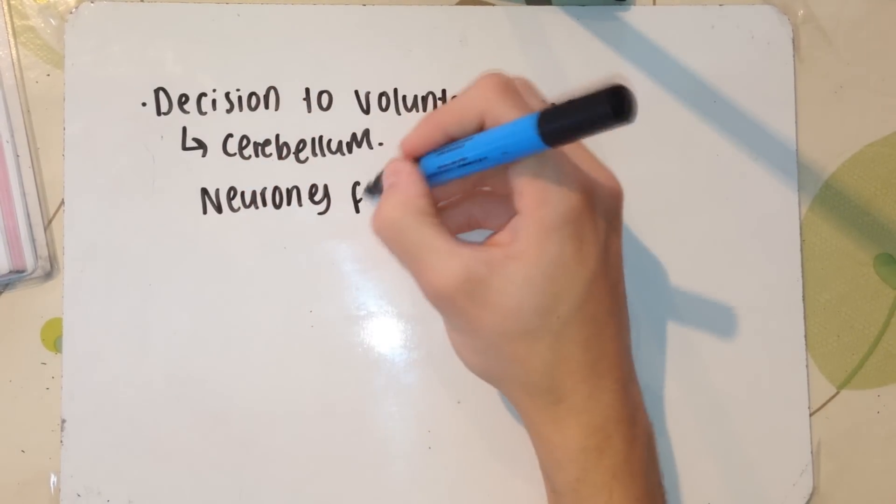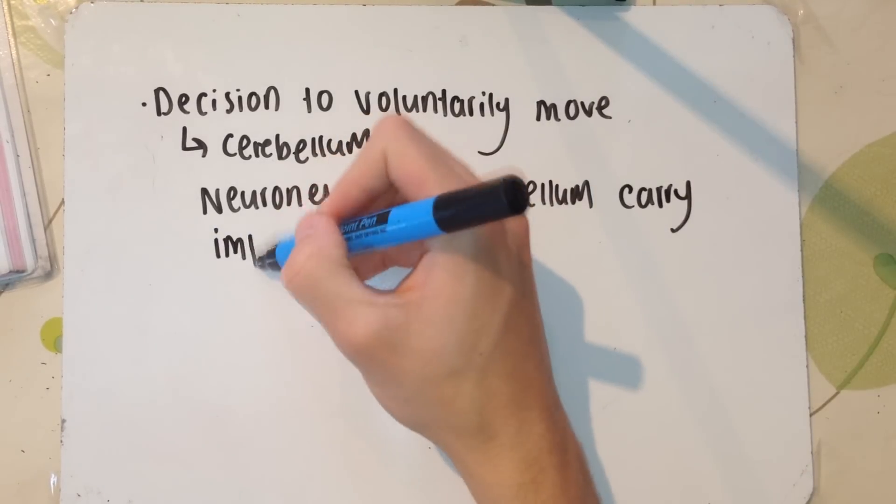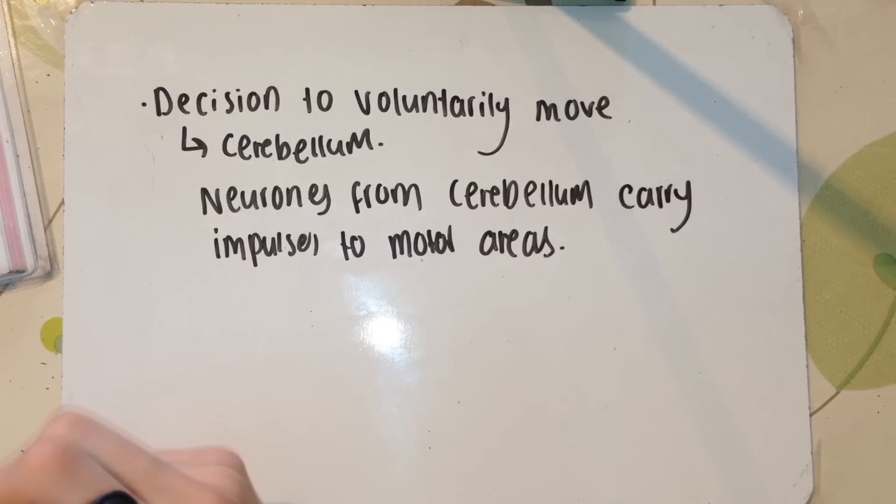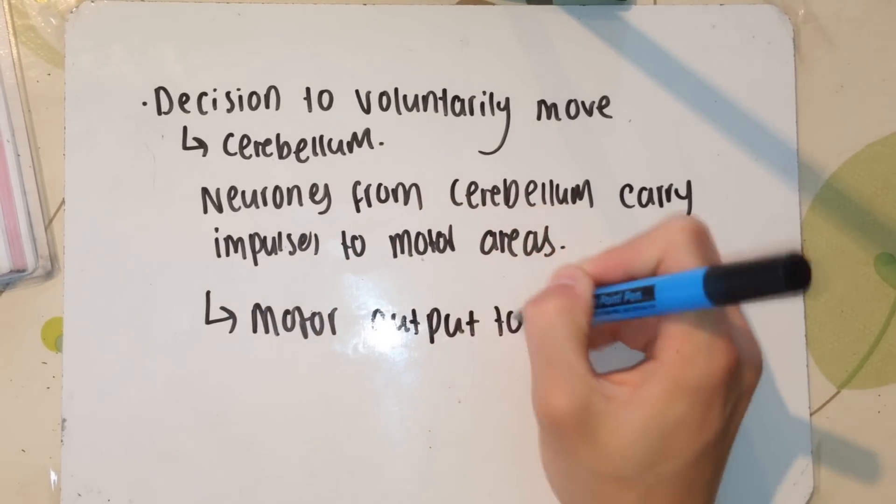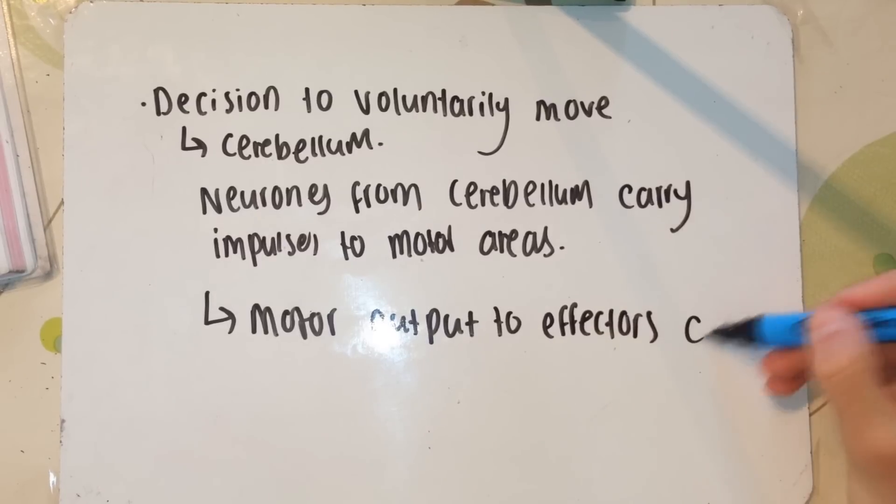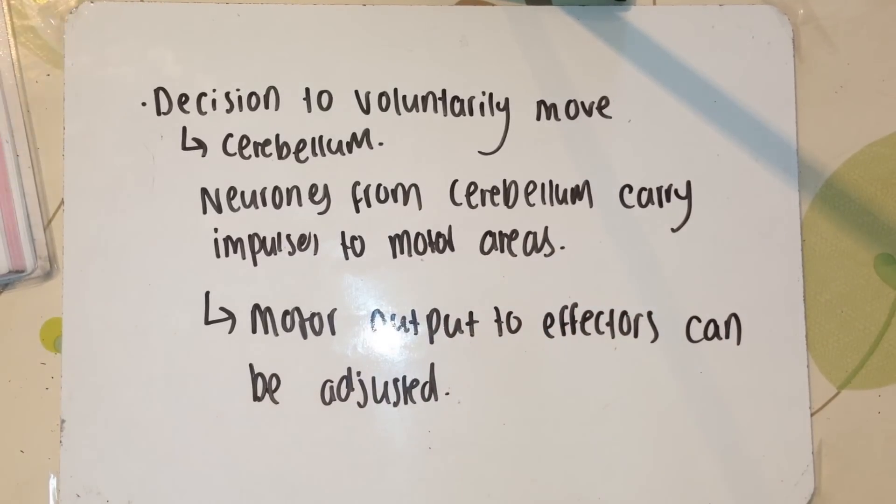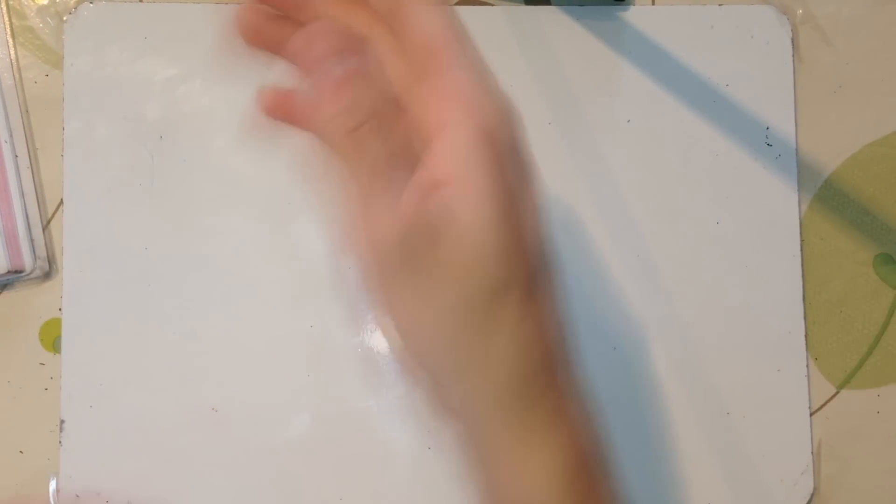So neurons from that cerebellum would carry impulses to motor areas, to the muscles further up my arm that allow me to move my arm, and then the muscles in my hands and my fingers to allow me to create the structures I'm creating and the shapes of my hands and fingers right now. So obviously then the motor areas transport that to effectors, so the muscles are used as an effector, as an output mechanism to enable me to do this.